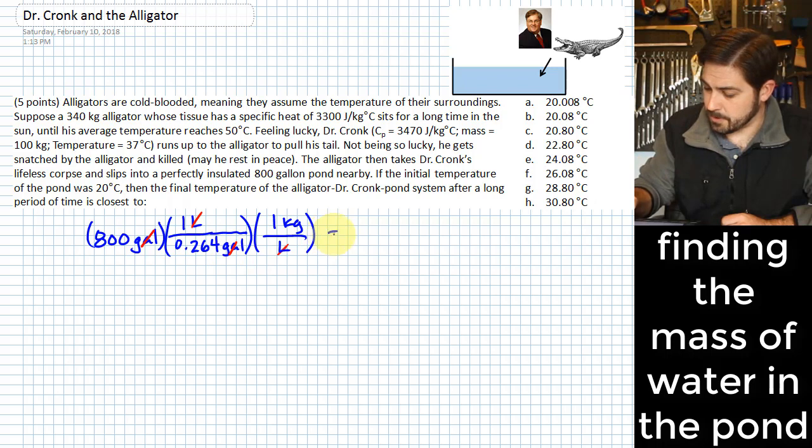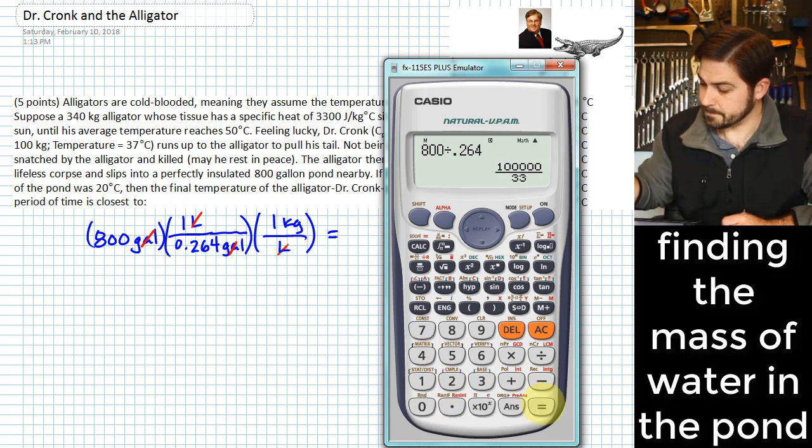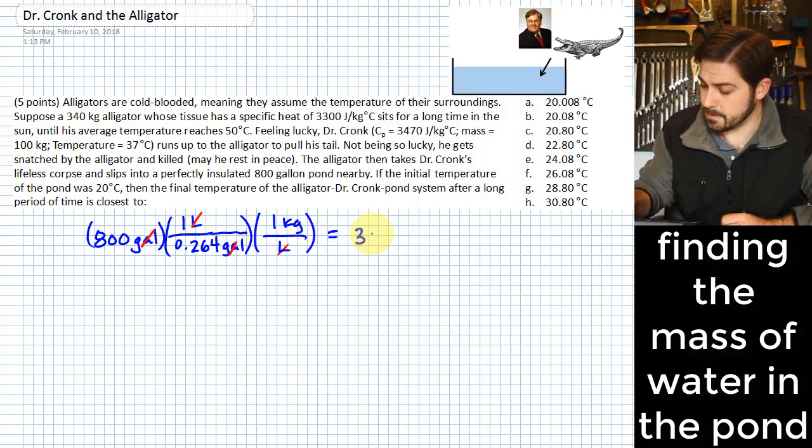And what we have here is 800 divided by 0.264. And this gives us 3030.3 kilograms.